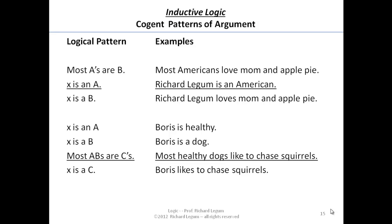And these basically are going to be the cogent patterns of inference, the cogent patterns of arguments, or the good patterns of arguments in inductive logic. Now turning to some of the not good patterns, since there aren't a lot.